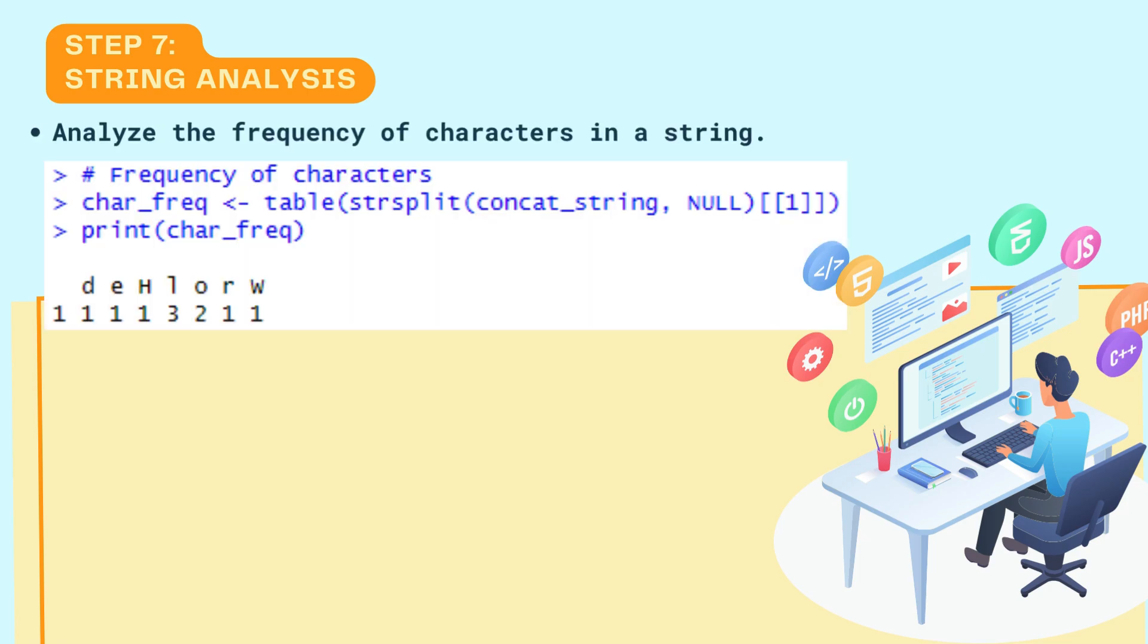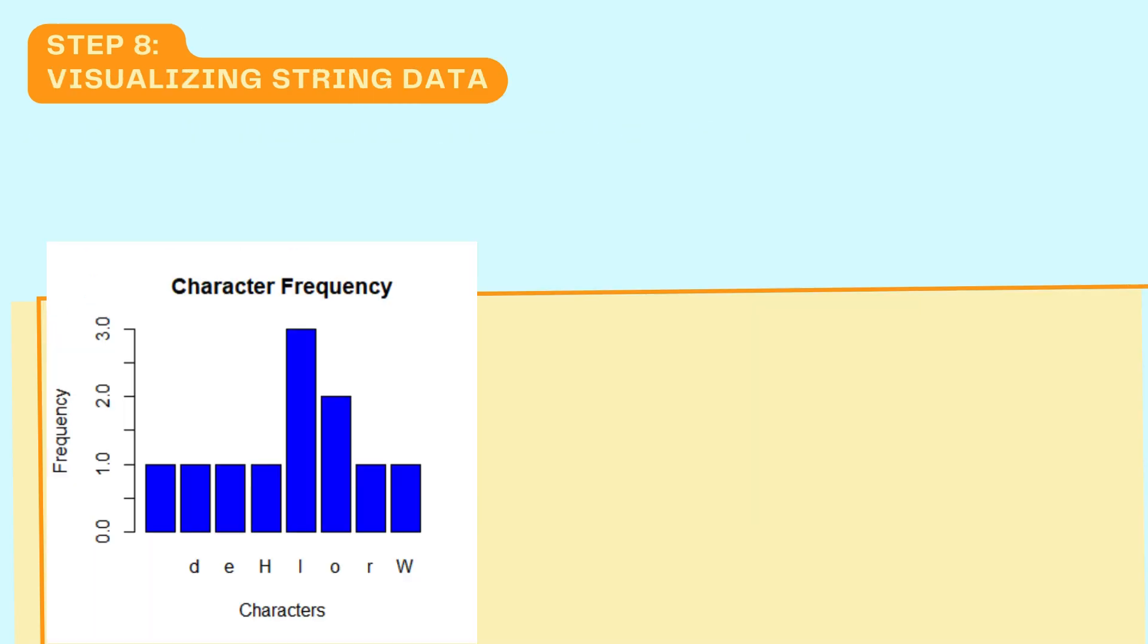Step 7: String Analysis. Analyze the frequency of characters in a string. We use the table function to count the frequency of each character in the concatenated string.